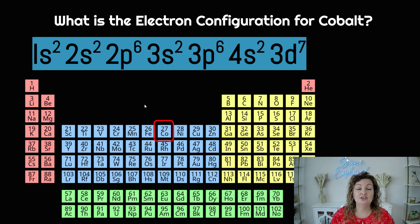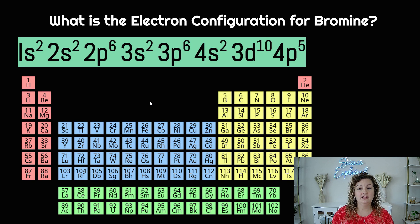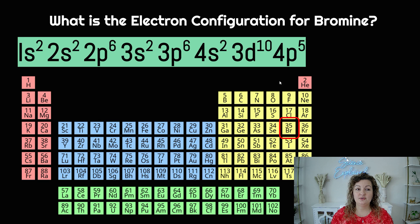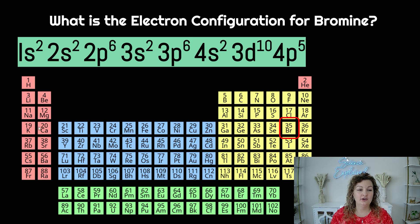Electron configuration for bromine — we locate bromine, it is right here. Start at the top: 1s2 — write it. 2s2 — write it. 2p6 — write it. 3s2 — write it. 3p6 — write that one. 4s2 — write that one. And now we're going backwards — for the D block.